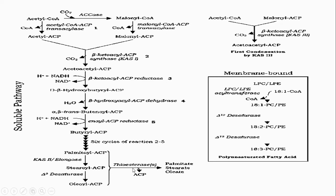All these products are then acted upon by thioesterases, which remove the ACP group to produce palmitate, stearate, and oleate. These are how fatty acids are being produced.